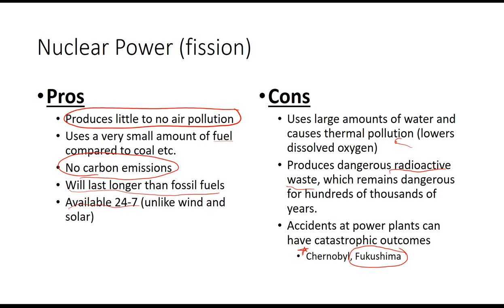To summarize fission: it's what we use in nuclear power plants, nuclear submarines, and aircraft carriers. Big atoms are split apart, releasing energy as heat, which boils water to create steam, which spins a turbine, which powers a generator that makes electricity.